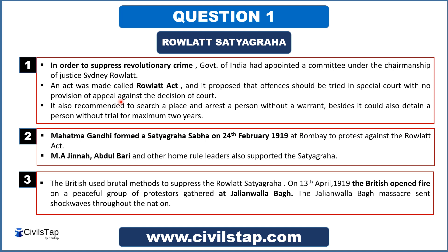Whatever decision was made against the revolutionaries, they could not appeal against it. Under this act, arrest could be made without a warrant, and a person could be detained for up to 2 years without a trial. This was a repressive law that eliminated the right to trial and allowed arrest without any warrant. People protested against this Rowlett Act.